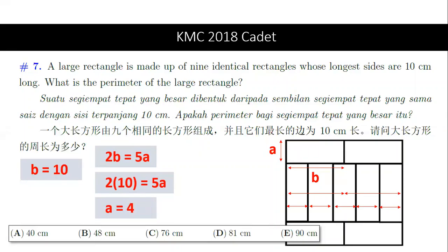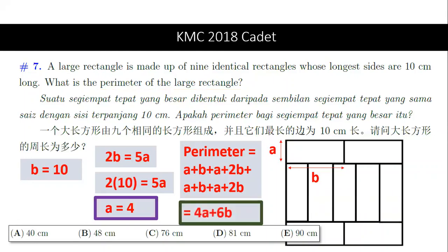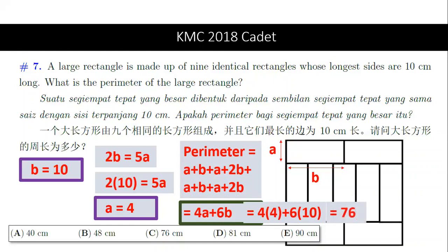Now let's look at the question again. The question requires us to find the perimeter of the large rectangle. We can construct an equation for the perimeter by going anti-clockwise for one loop: perimeter equals A plus B plus A plus 2B, plus A plus B plus A plus 2B. Substituting A equals 4 and B equals 10, we get our final answer, which is 76 cm.